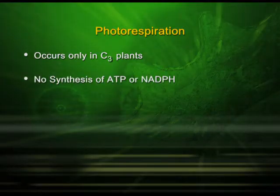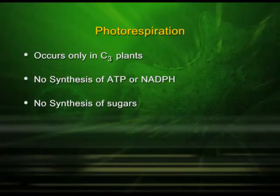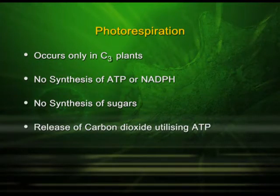In photorespiration, there is no synthesis of ATP, no synthesis of NADPH — meaning the products of the light reaction will not be formed. There is no synthesis of sugars, so food is not prepared by the plant nor stored. Instead of oxygen, carbon dioxide is released, utilizing ATP. Whatever ATP is present in the plant is being used to produce carbon dioxide, which we do not require. This is considered a wasteful process. It can take place in C3 plants under certain circumstances, but it does not take place in C4 plants.